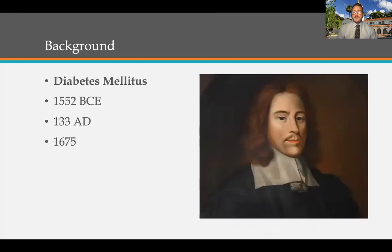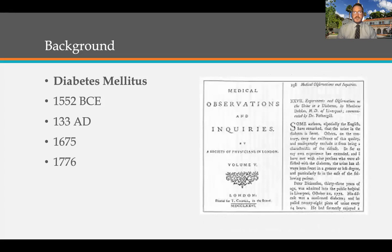In 1675, Professor Thomas Willis of Oxford University, in his book Rational Pharmaceutical Treatments, describes the urine of his patients with diabetes as being beautifully sweet. The method of tasting the urine was the first method for diagnosing patients with diabetes. In 1776, English physician Matthew Dobson from Liverpool discovered that when he evaporated a patient's urine, the resulting residue was a granulated substance that smelt and tasted of sugar — an extension of Willis's diagnostic procedure.